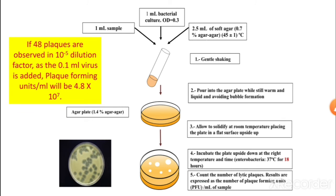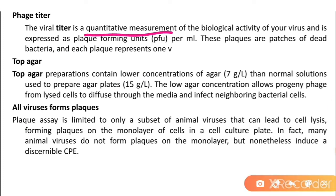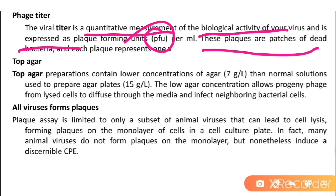For example, if 48 plaques are observed at a 10⁻⁵ dilution factor with 0.1 ml of virus added, the plaque forming units per ml will be 4.8 × 10⁷. The titer is a quantitative measurement of the biological activity of your virus, expressed as plaque forming units (PFU) per ml. Each plaque represents a patch of dead bacteria caused by a single virus.